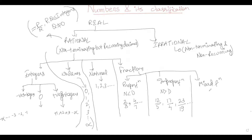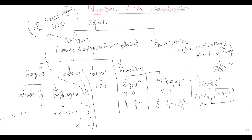Any improper fraction can be converted into a mixed fraction. For example, 17 by 4: dividing 17 by 4 gives quotient 4, remainder 1, so it becomes 4 and 1 by 4 as a mixed fraction. Conversely, to convert a mixed fraction like 2 and 2 by 3 into an improper fraction: multiply 3 by 2 and add 2, giving 8 by 3.